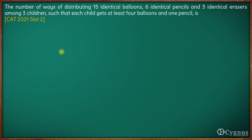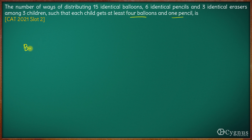In this question we have to figure out the number of ways of distributing 15 identical balloons, 6 identical pencils and 3 identical erasers among 3 children, such that each child gets at least 4 balloons and 1 pencil. So we have balloons, we have pencils and we have erasers.